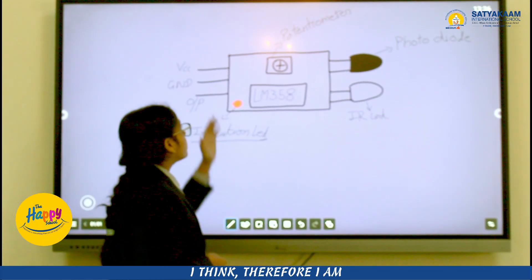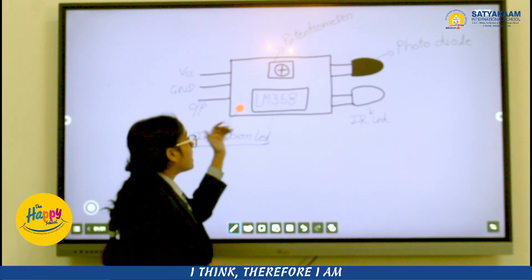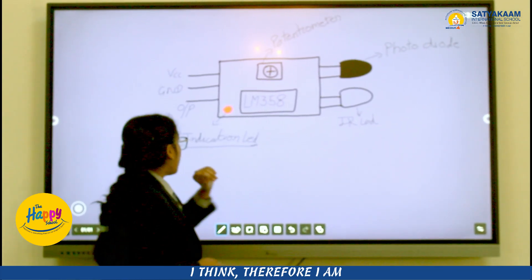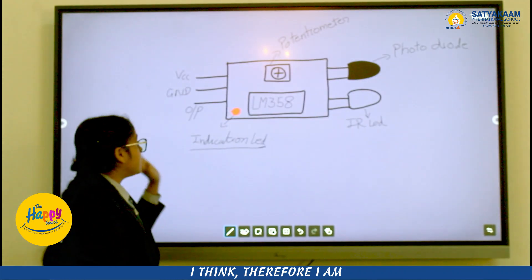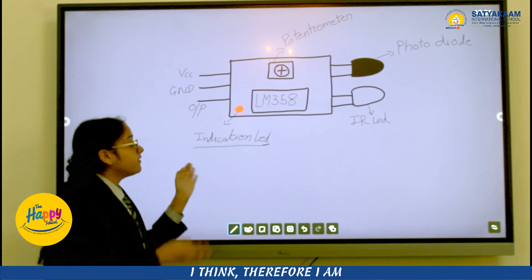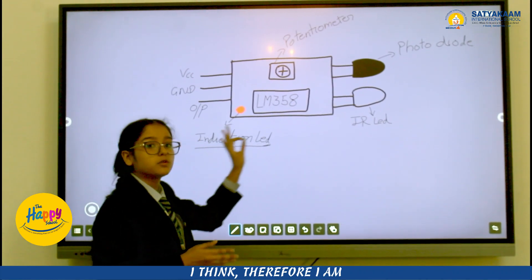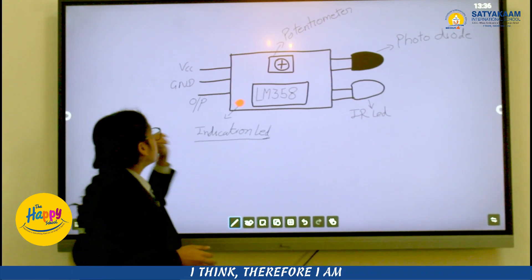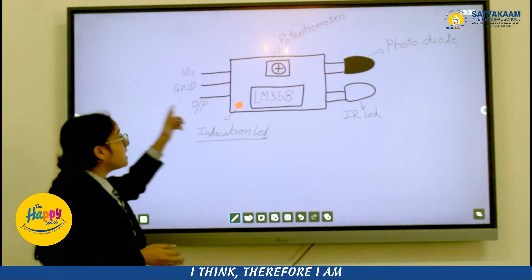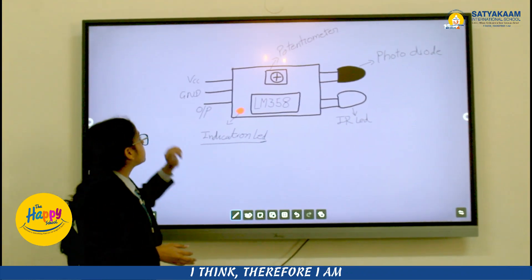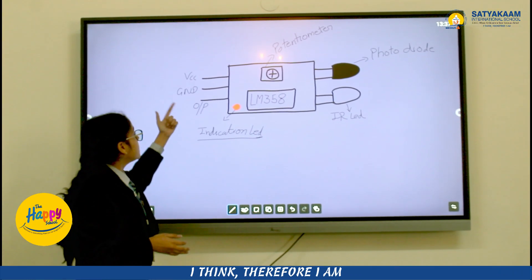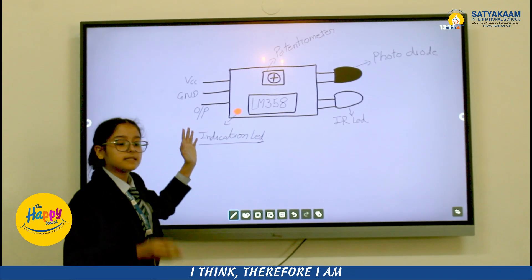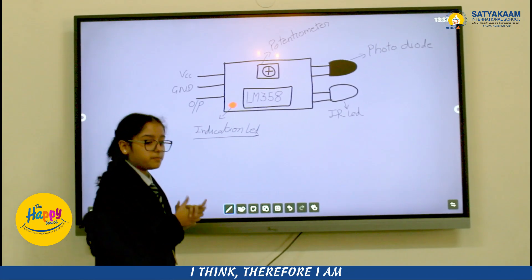Then we have a potentiometer, the LM358, and an indication LED which tells us that current is flowing through this IR sensor. The IR sensor has three pins: VCC, GND, and the output pin, also known as the operational pin.